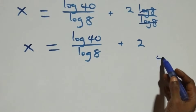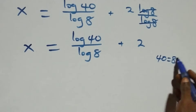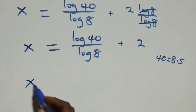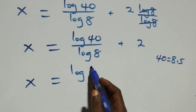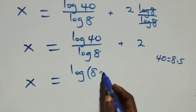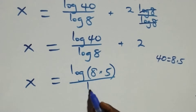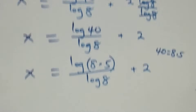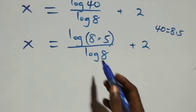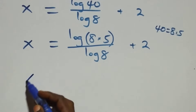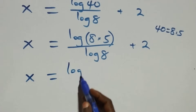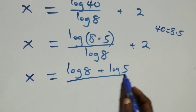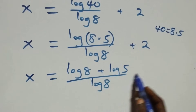So x equals log 40 over log 8 plus 2. We can also write 40 as 8 times 5, so x becomes log of 8 times 5 over log 8 plus 2. Expanding using the product rule gives x equals log 8 plus log 5 over log 8, plus 2.